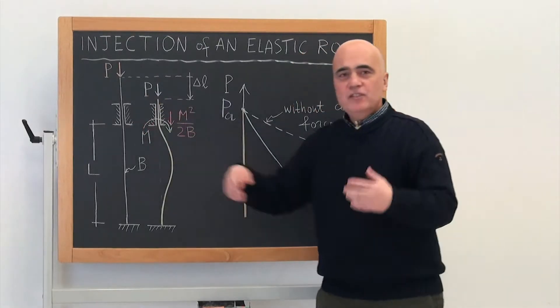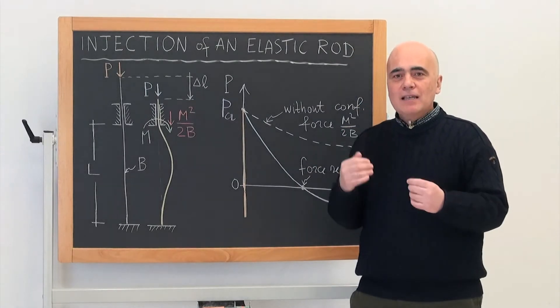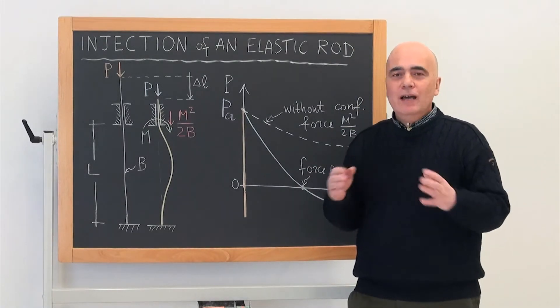So the sliding sleeve is a device where the elastic rod can freely slide without any friction.